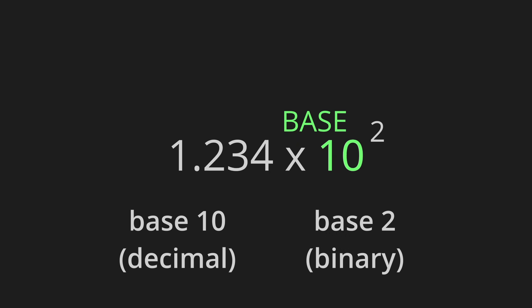Scientific notation is most commonly seen as some significand times 10, but that's only because we like working in base 10. There's nothing stopping us from writing a base 2 number in scientific notation — we just end up with something like this.